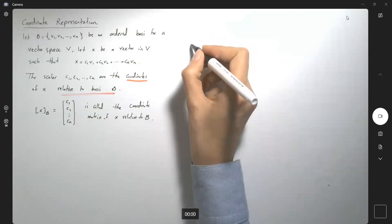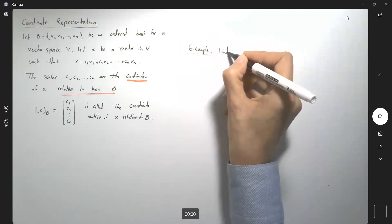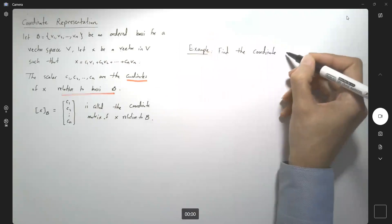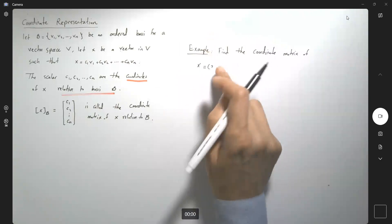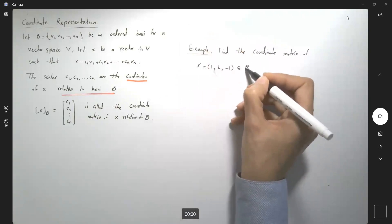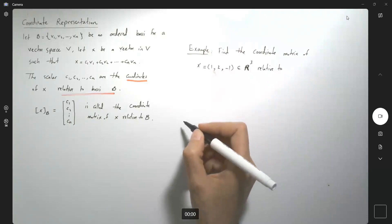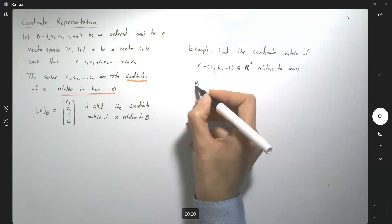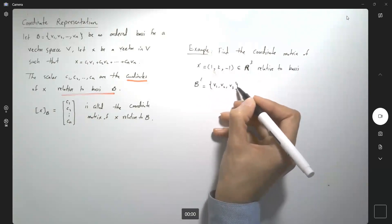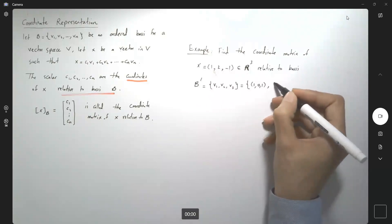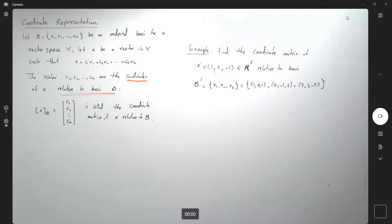Let's take a look at another example. We have to find the coordinate matrix of vector x, which is given as (1, 2, -1), relative to a non-standard basis B' = {v1, v2, v3}, where v1 = (1, 0, 1), v2 = (0, -1, 2), and v3 = (2, 3, -5).